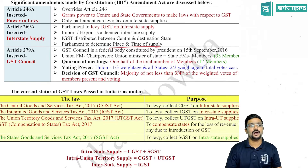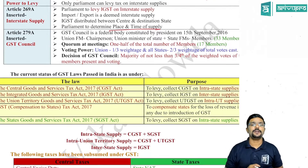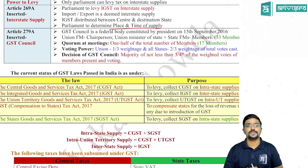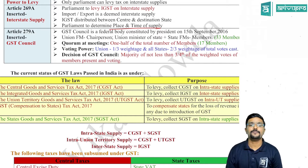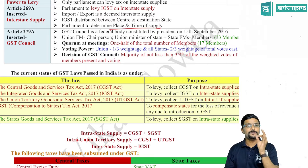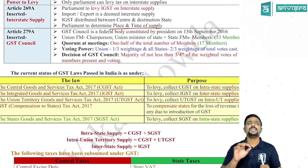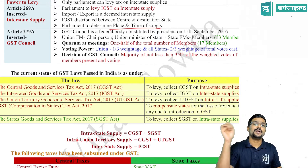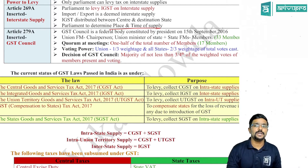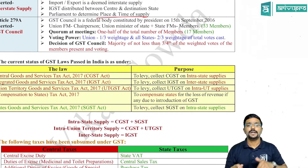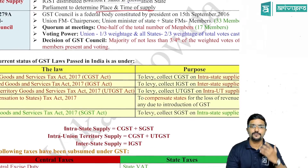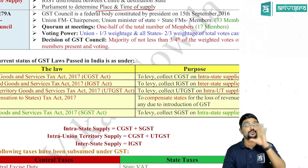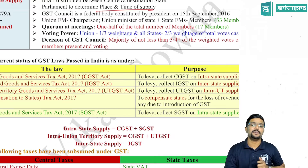Coming to Article 279A, which talks about the GST Council: the GST Council is a federal body constituted by the President of India on 15 September 2016. The Union Finance Minister is the chairperson, and the Union Minister of State in charge of finance and all the state finance ministers are members of this council. One of them will be chosen as vice chairperson. Totally there will be 33 members, and the quorum for each GST Council meeting will be half of the total members, that is 17 members.